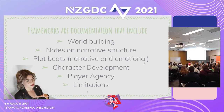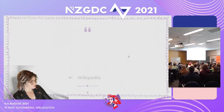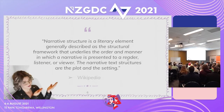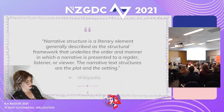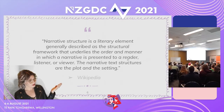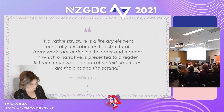One thing we should cover very quickly is narrative structure, as it will greatly inform the way you do your narrative framework. What is narrative structure? It is a literary element generally described as the structural framework that underlies the order and manner in which a narrative is presented to a reader, listener, or viewer. The narrative text structures are the plot and the setting — from Wikipedia, and it's a very good definition. Narrative structure plays a key role in planning your narrative and informs how you build your narrative frameworks.